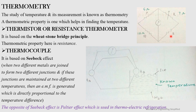The thermometric property here is resistance. For a balanced Wheatstone bridge, P/Q must equal R/S, and from that we can find the value of S — for example, 14 ohms — and from there determine the temperature. The key points are: it is based on the Wheatstone bridge principle and the thermometric property is resistance.